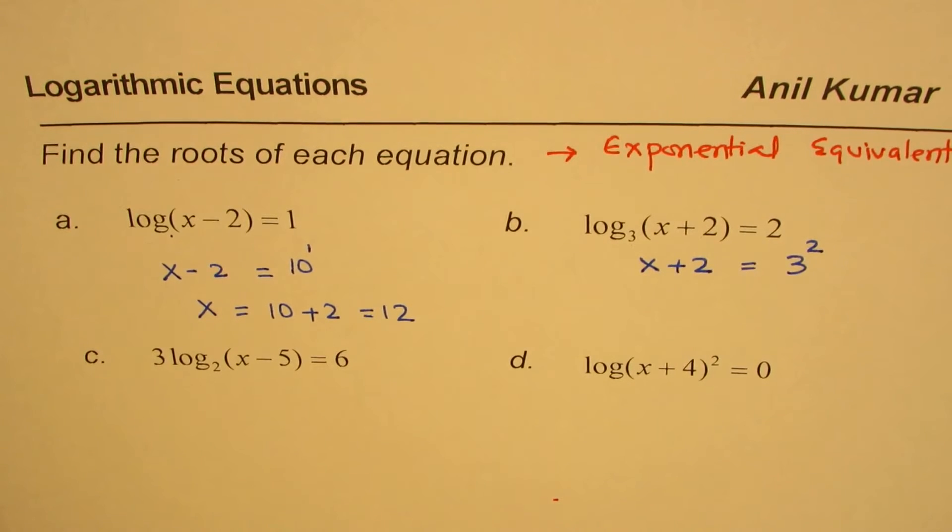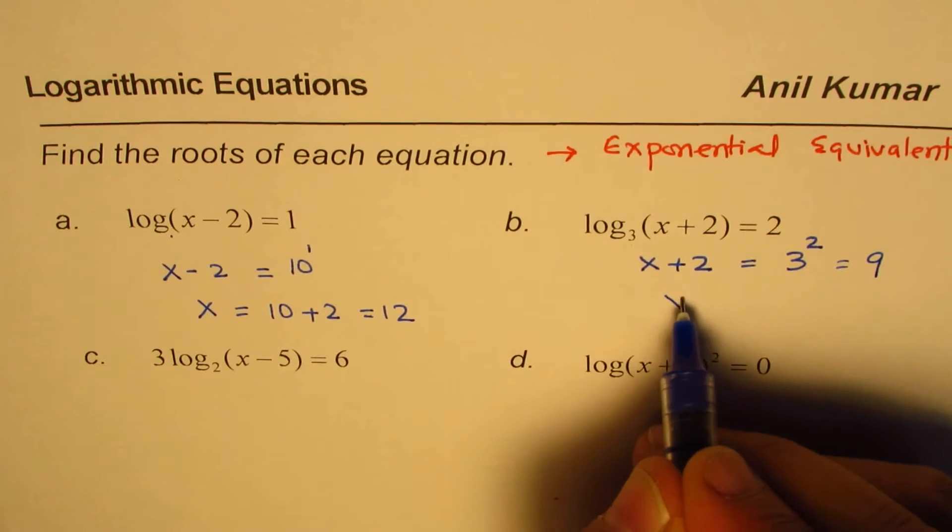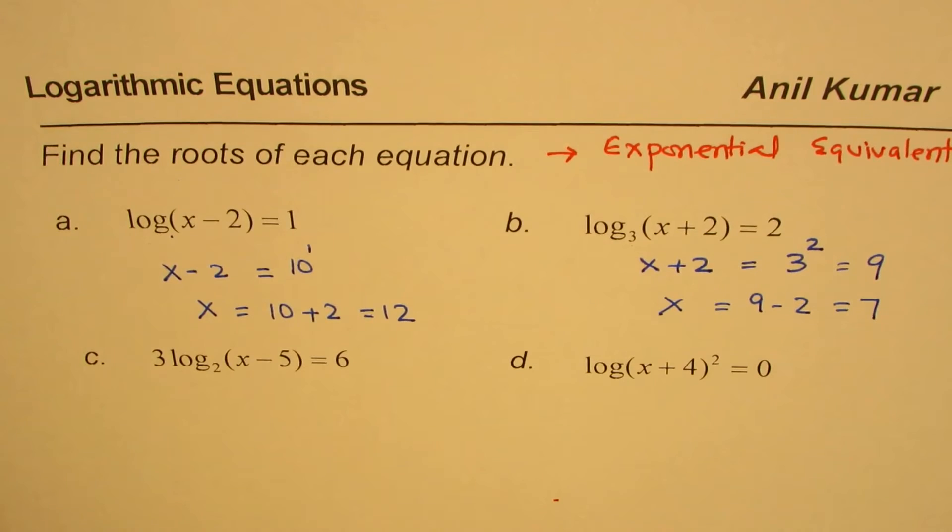So x plus 2 equals 3 squared. That is the exponential equivalent of the logarithmic equation. That helps to solve. We know 3 squared is 9, so we can rewrite x as equals to 9 minus 2, which is 7. So we get x equals 7 as our answer.